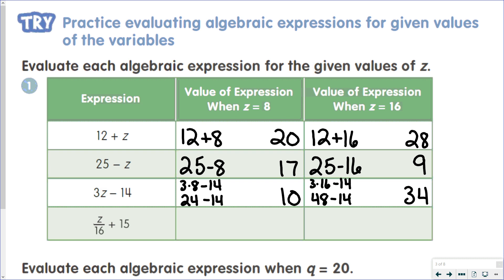And then Z over 16 plus 15, so that would be 8 over 16 plus 15. Well, 8 over 16 is half. 1 half plus 15 is 15 and a half. Or when Z equals 16, we'd have 16 over 16 plus 15. 16 over 16 is 1. 1 plus 15 is 16.